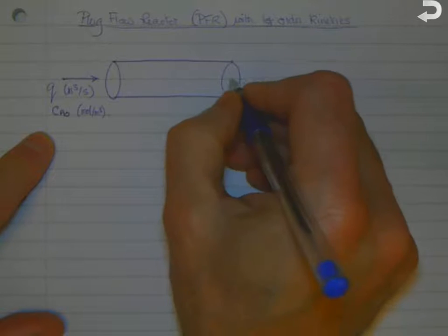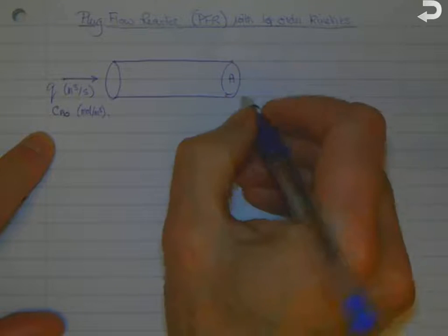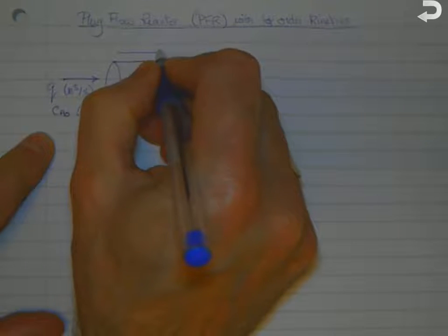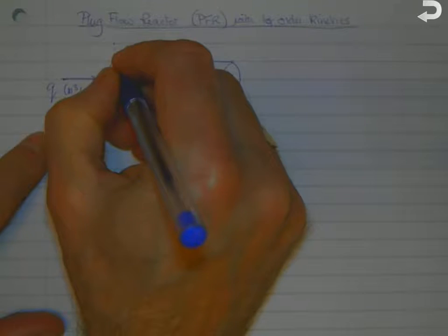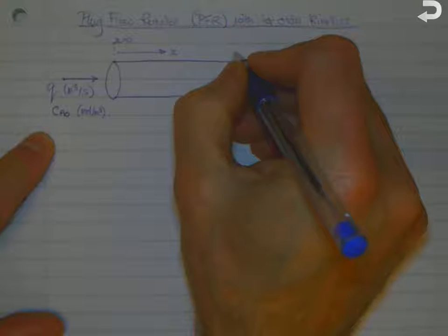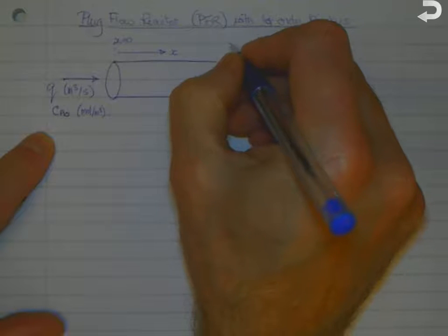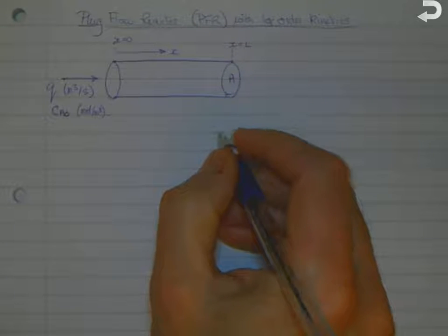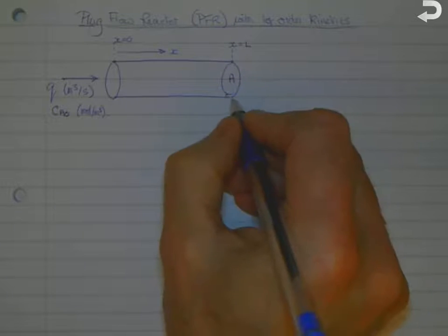A cross-sectional area A, and we're going to consider the distance along the reactor to be x. At the inlet we've got x equals naught, the outlet x equals L, which is the length of our tubular flow reactor.